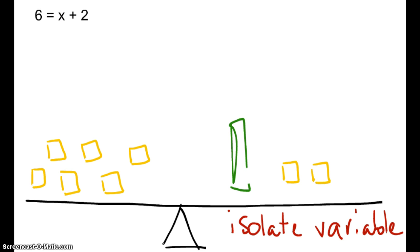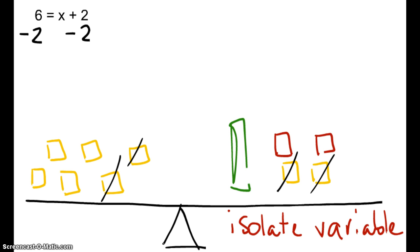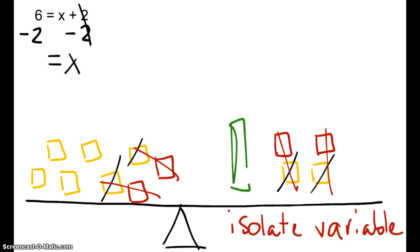I need to get x by itself. So what I could do is remove these 2 from the right. Keeping it balanced, I also have to remove 2 from the left. You could look at it as subtracting 2 and subtracting 2. Or you could add negatives to the left and the right because those create zero pairs — it doesn't matter which way you look at it. So this zeroed out. I have x on the right and 6 minus 2 on the left, so x has a value of 4.